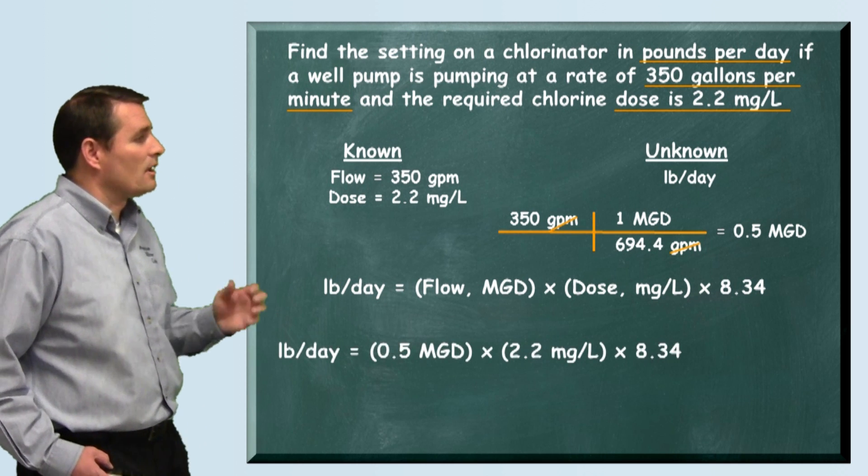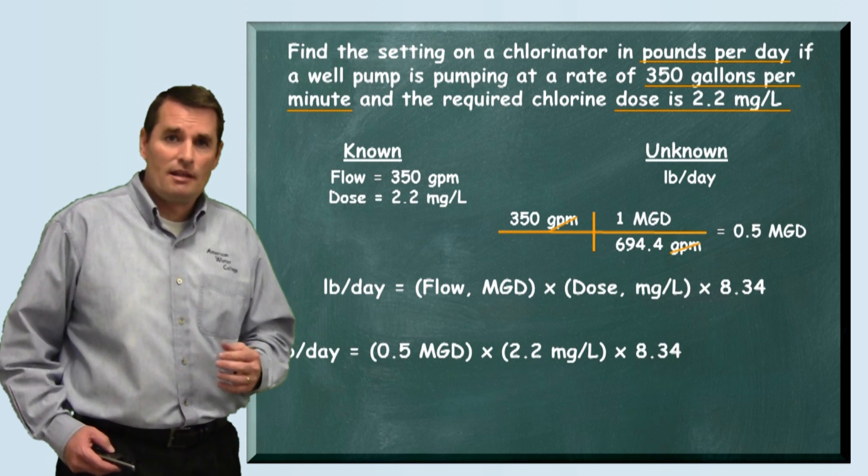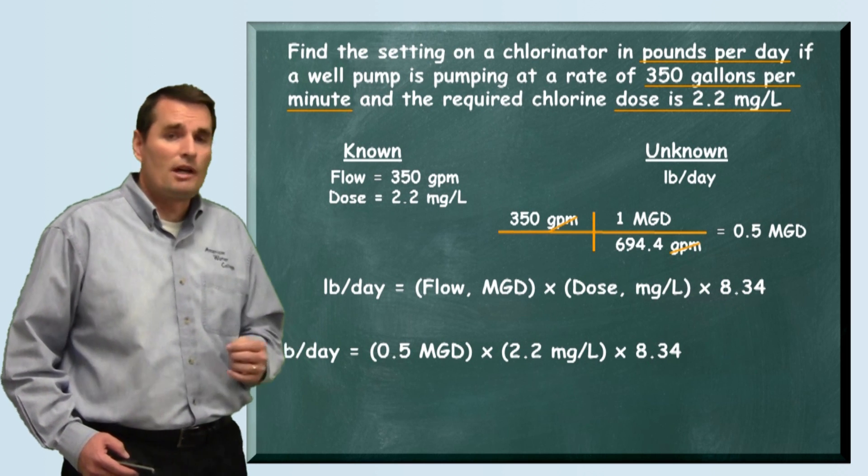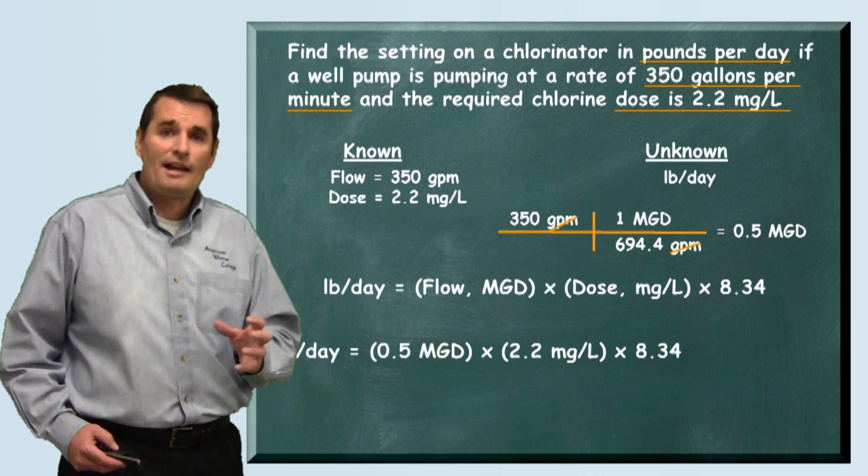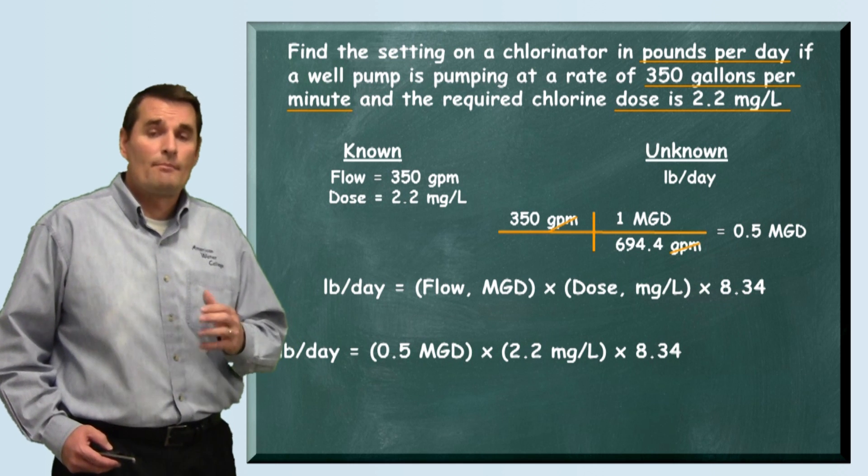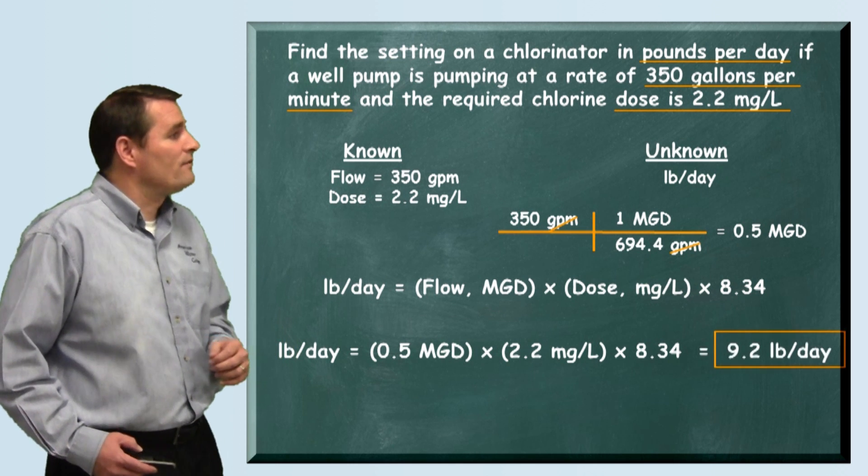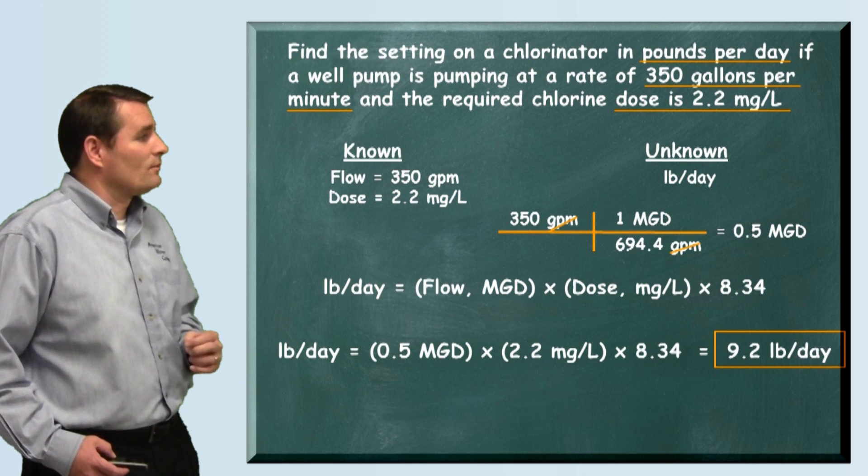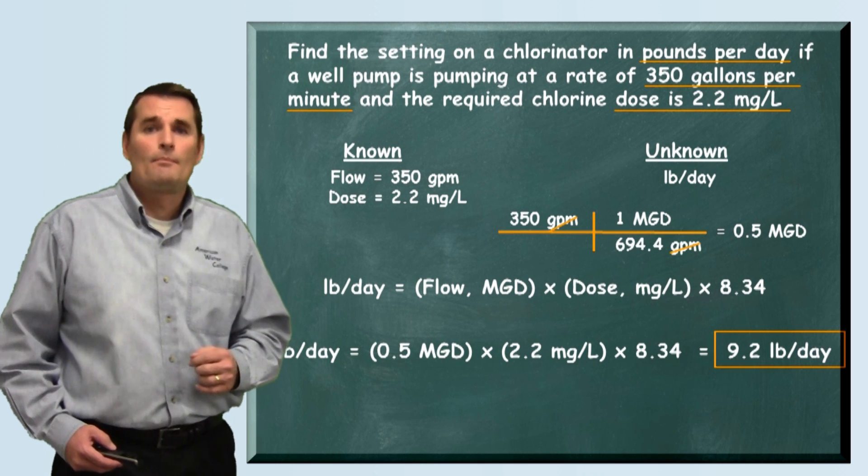So when we plug our numbers in, our 0.5 MGD and multiply that by the dose of 2.2 milligrams per liter times the 8.34 pounds per gallon, we find that we're dosing at a rate of 9.2 pounds per day.